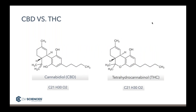CBD and THC have the same chemical formula — 21 carbons, 30 hydrogens, and 2 oxygens — and yet they have different effects. Molecules with the same chemical formula but a different chemical structure are called structural isomers. CBD and THC are structural isomers. The only structural difference is the location of one hydrogen atom: it's on the sixth carbon with THC and on a different carbon with CBD. The location of this one hydrogen atom is the difference between getting high or not getting high, which is remarkable when you think about how specific biology can be.